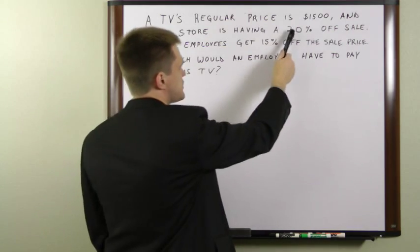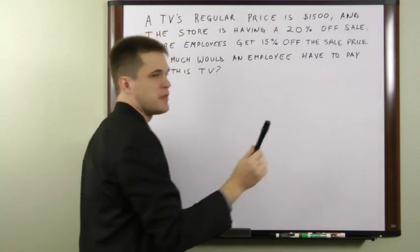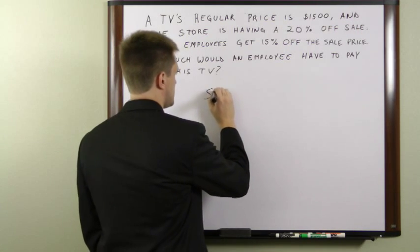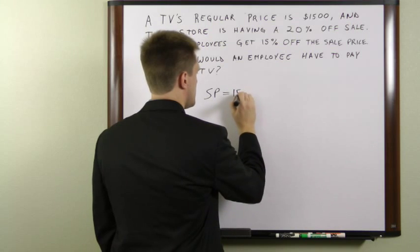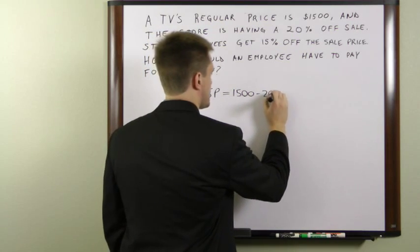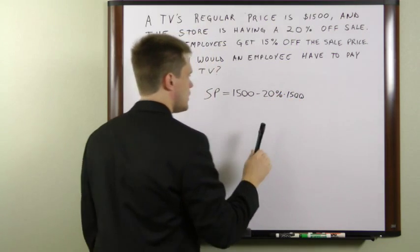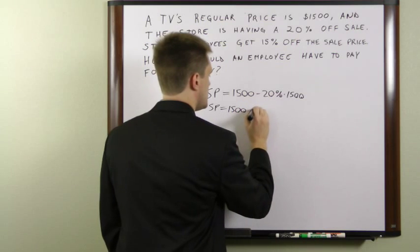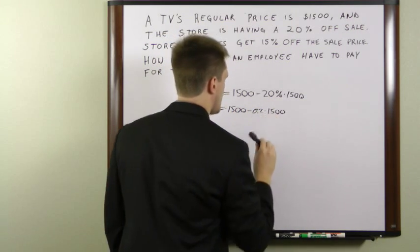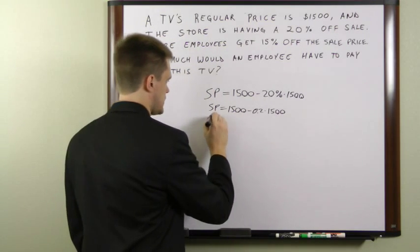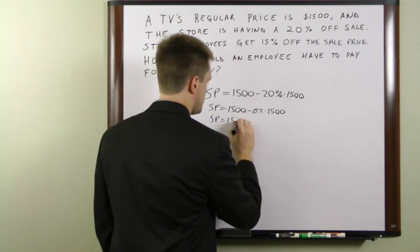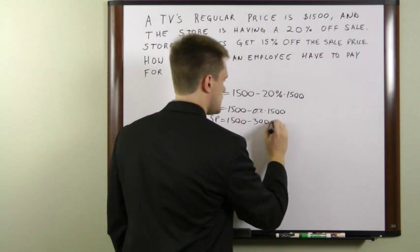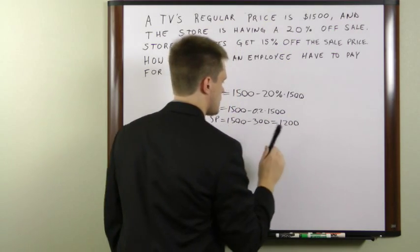What you have to do is take 20% off the regular price to get the sale price, and then take 15% off the sale price. To do this, we find the sale price: $1,500 minus 20% times $1,500, which we rewrite as $1,500 minus 0.2 times $1,500. That gives us $1,500 minus $300, so our sale price is $1,200.